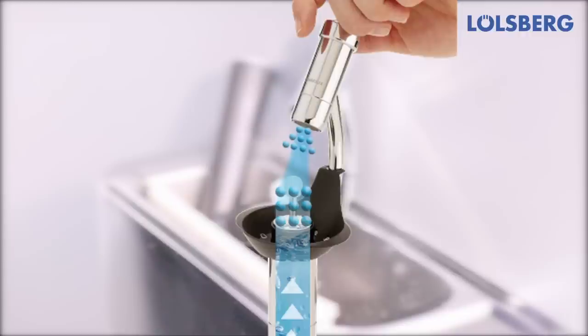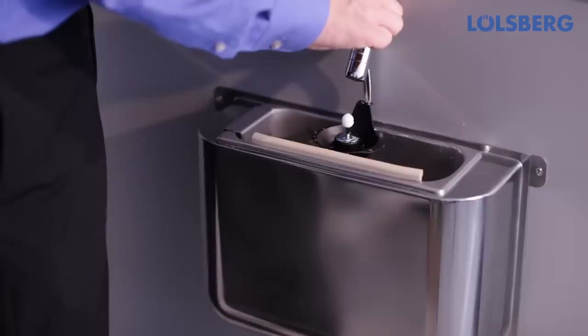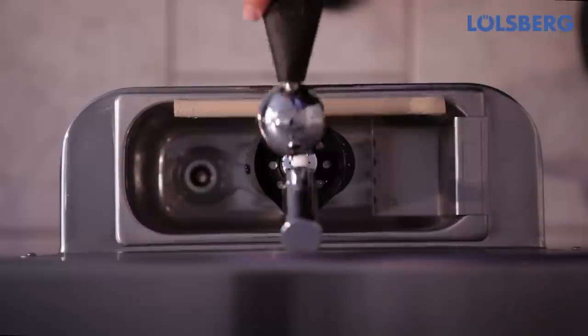Adjusting the water jet from the upper shower head helps to avoid water splashing. It can be even shut off completely.